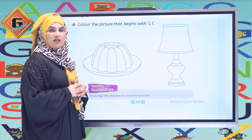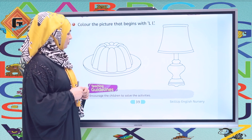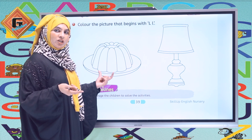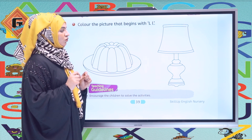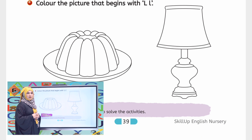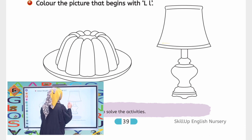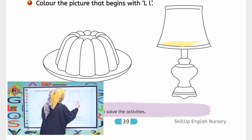Now let's colour the picture that begins with letter L. We have two different pictures — the first one is jelly. What is the beginning sound of jelly? J. And the next one is lamp — what is the beginning sound of lamp? It's L! That means we are going to colour the lamp. Lamp can be in any colour, so whatever you want, you can use that colour. I have a light yellow colour because normally this part is golden as light is light. Fill in the white spaces, put the strokes on one side, and complete colouring all the spaces. Teachers are going to encourage the students to solve the activities.